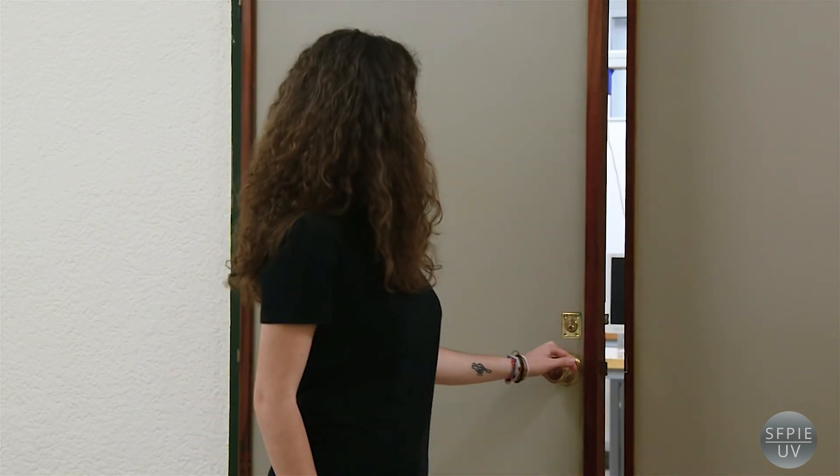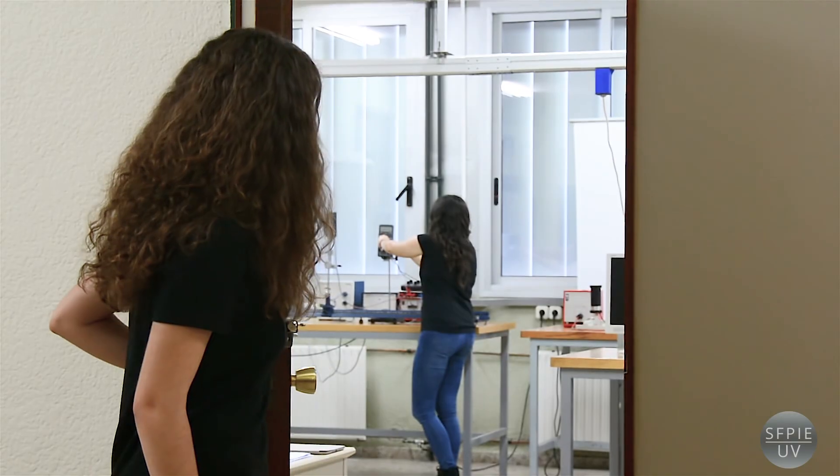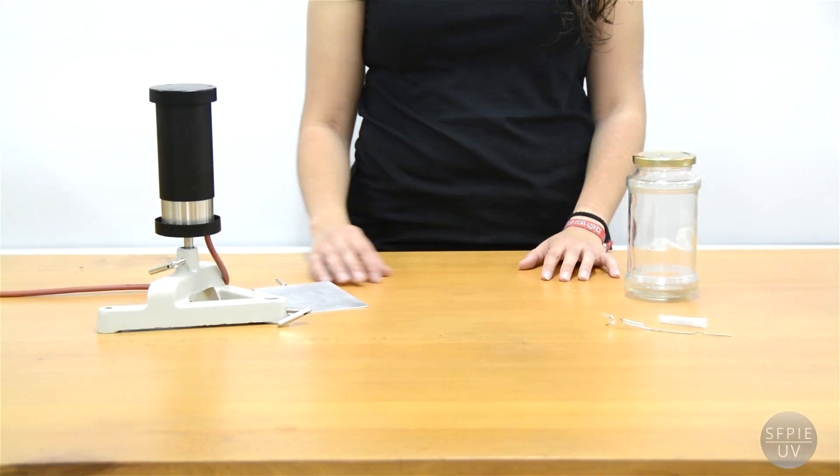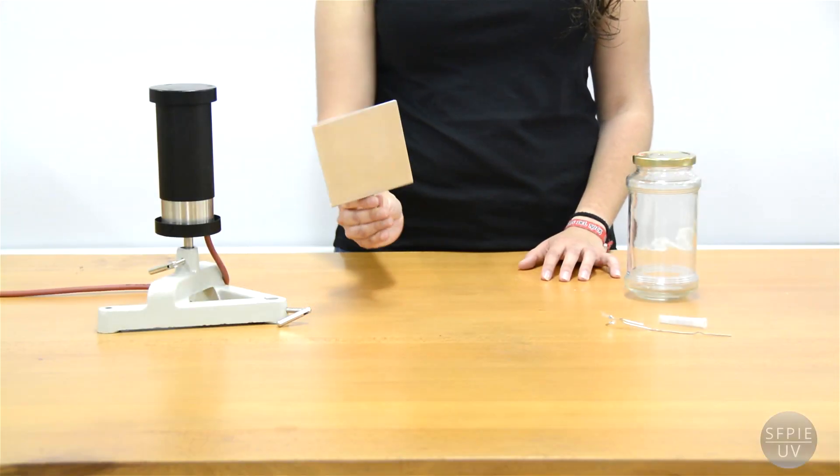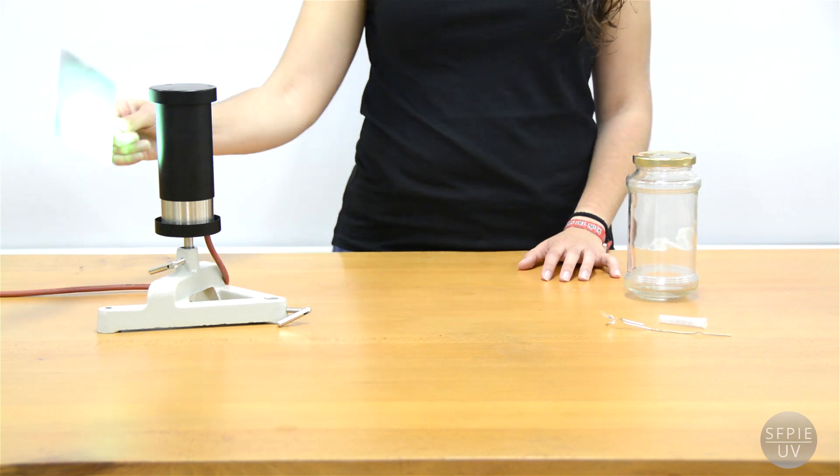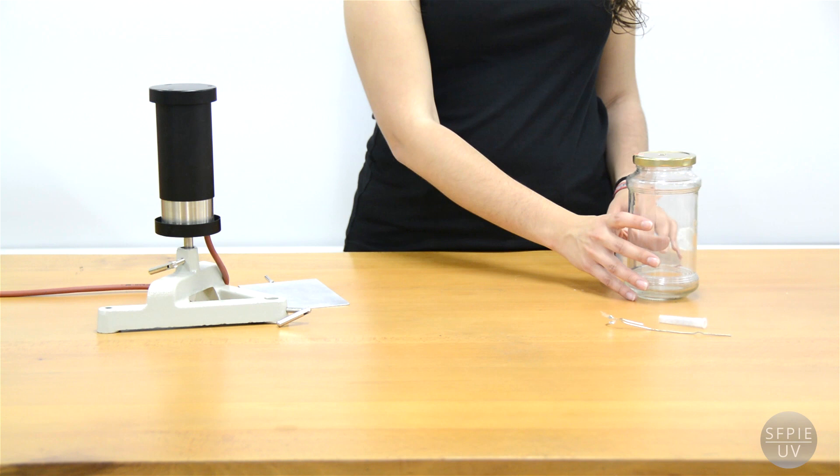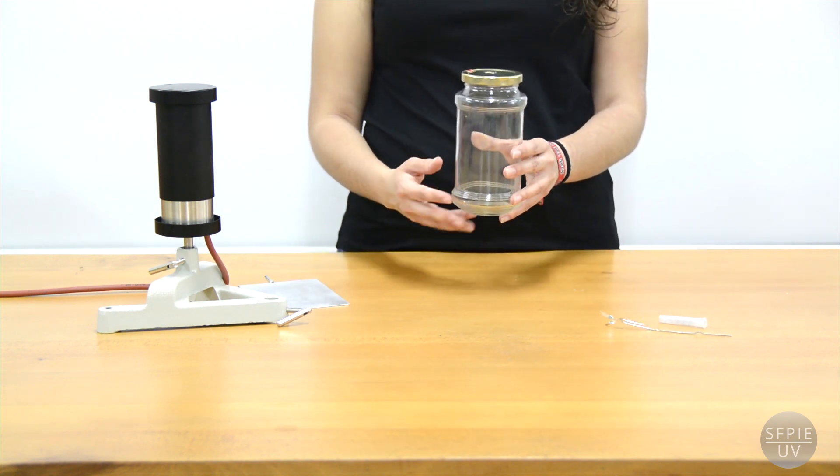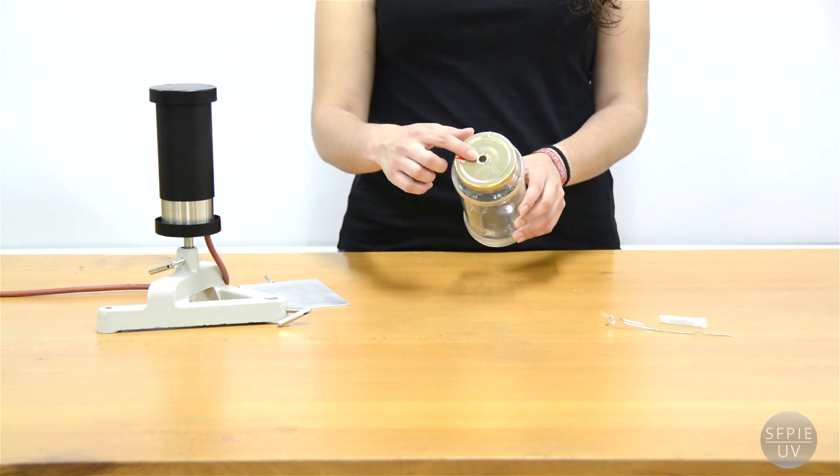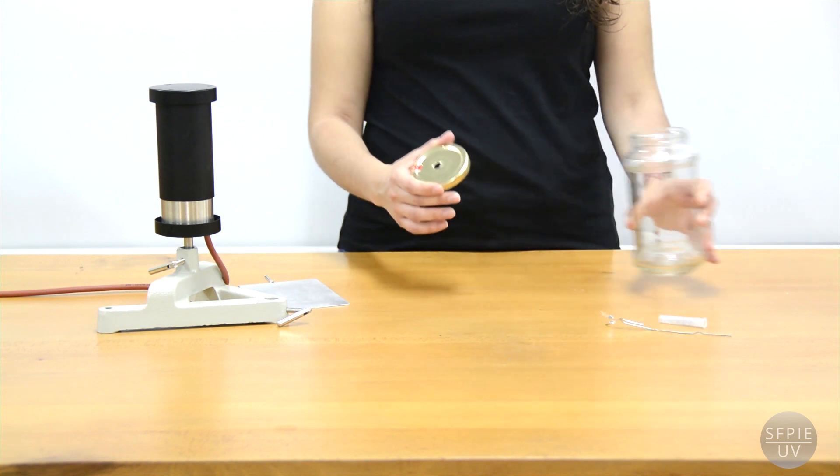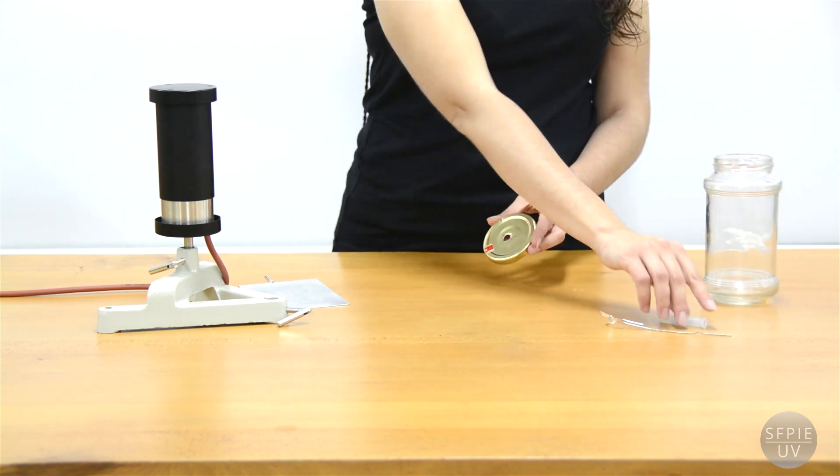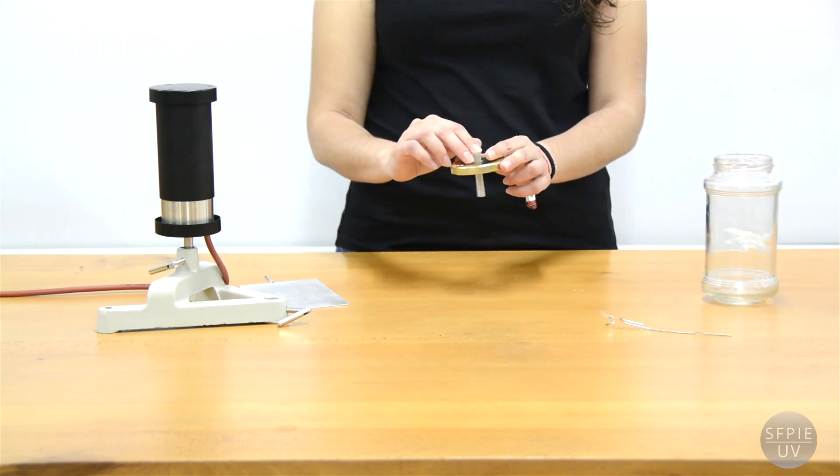This emission can be shown with a simple experiment that we have prepared in the laboratory. Let us see it. Here we have a metallic aluminum plate that we light up with this lamp. To detect the emission of electrons, we are going to use an electroscope that we have made with this glass jar. In its lid, we have drilled a hole.